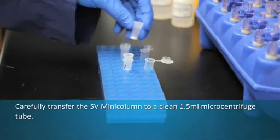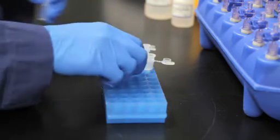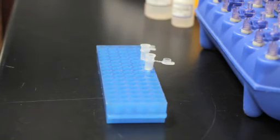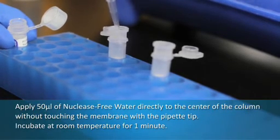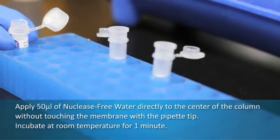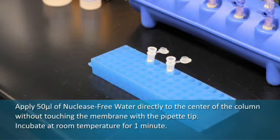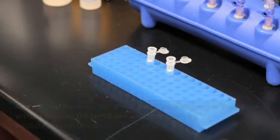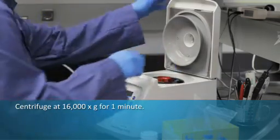Carefully transfer the SV mini column to a new 1.5 milliliter microcentrifuge tube, being careful not to wet the bottom of the mini column with the flow through. Apply 50 microliters of nuclease free water directly to the center of the column without contacting the membrane. Incubate at room temperature for 1 minute. Centrifuge for 1 minute at 16,000 times gravity.